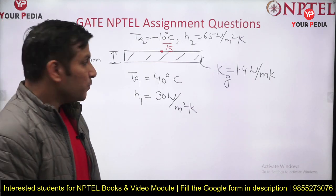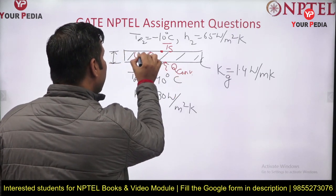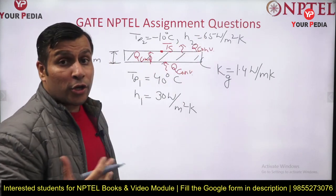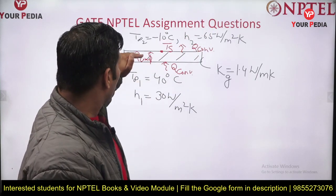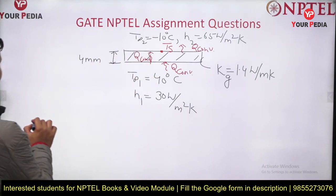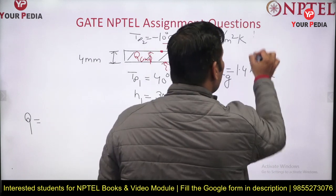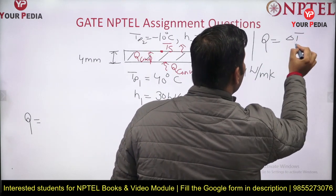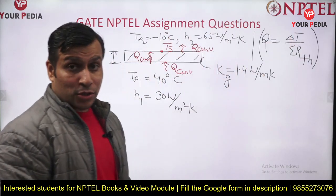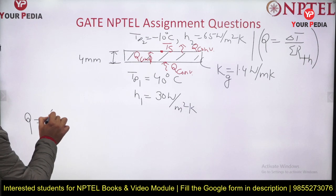In steady state, whatever heat is convecting on the inside is conducted through the material and then convected out. Q_in equals Q_out, so Q_convection equals Q_conduction equals Q_convection. We can write: q = ΔT / ΣR_thermal. Considering the temperature from 40°C to Ts: q = (40 - Ts) / ΣR_thermal.